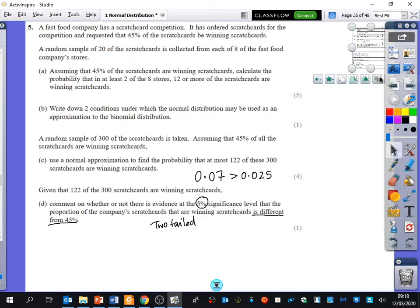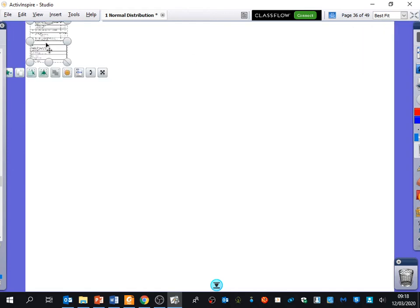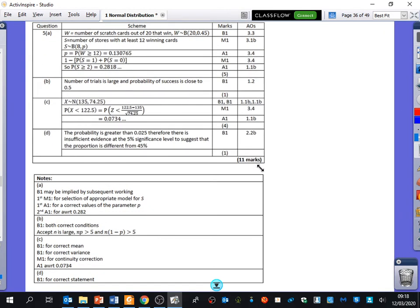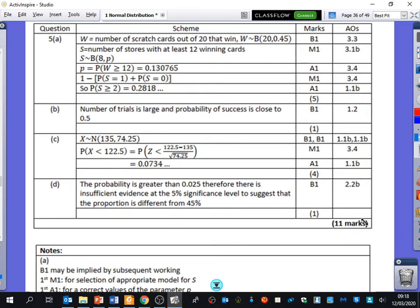So even though it's not actually going to change our answer, instead of it being compared to 5%, we should be saying that 0.07 is greater than 0.025, okay? Because it's actually a two-tailed test in disguise there. So let's just quickly talk through those different things that we've got there. So you can see that we've got the sense of there being the double binomial that happens at this stage here. We've then got the number of trials is large, and the probability is close to 0.5. We've got the continuity correction for it being at most 122, which means less than or equal to 122. And notice how it's greater than 0.025 because it's a two-tailed test. So we don't think that the proportion is different to 45% in that case that we've got there.